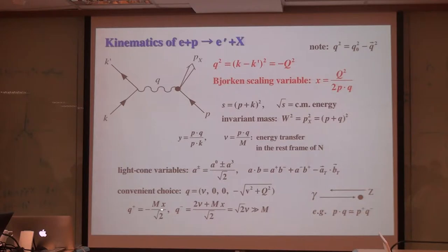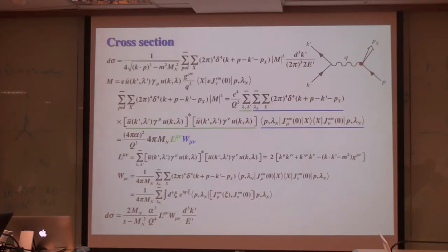Another important variable is the Bjorken scaling variable, Q-square divided by 2P dot Q. These are the two variables. In my talk, I occasionally use light-cone variables. The convenient choice for the photon momentum, if taken like this one, then Q plus is given by the mass of the nucleon divided by square root 2.